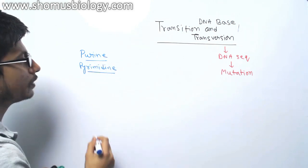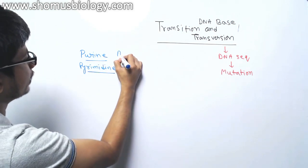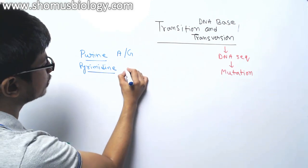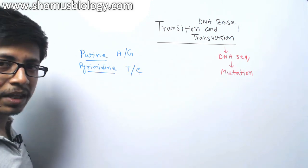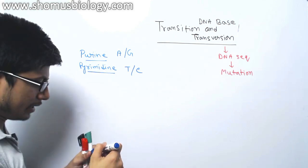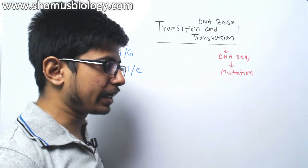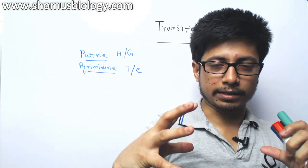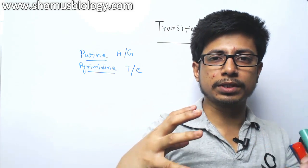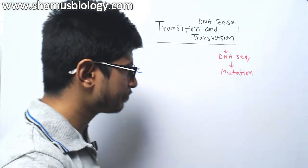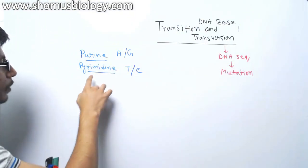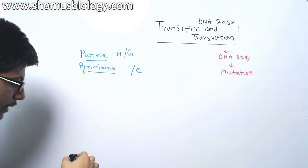Two types of purine are there: adenine and guanine, and pyrimidine: thymine and cytosine. Purine bases are bigger. They carry two cycles together, two rings, while pyrimidine contains only one ring.